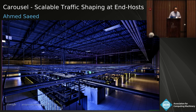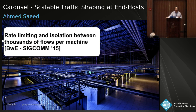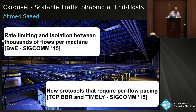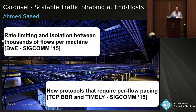This is the customary picture of a Google Data Center. Operating a network at this scale is introducing new requirements for traffic shapers. For instance, rate limiting and isolation between millions of flows — thousands per machine — is now a requirement. Also, new protocols that require per-flow pacing, meaning inserting gaps between packets, is becoming a requirement for something like TCP BBR or Timely. These requirements are putting unprecedented overhead on traffic shapers in terms of number of flows and number of packets.